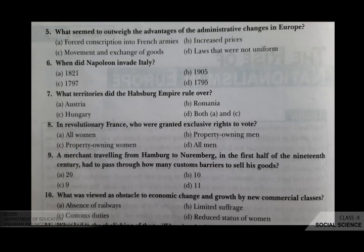The ninth question: a merchant travelling from Hamburg to Nuremberg in the first half of the 19th century had to pass through how many custom barriers to sell his goods? Your options are A 20, B 10, C 9, D 11. The correct answer is D, 11.